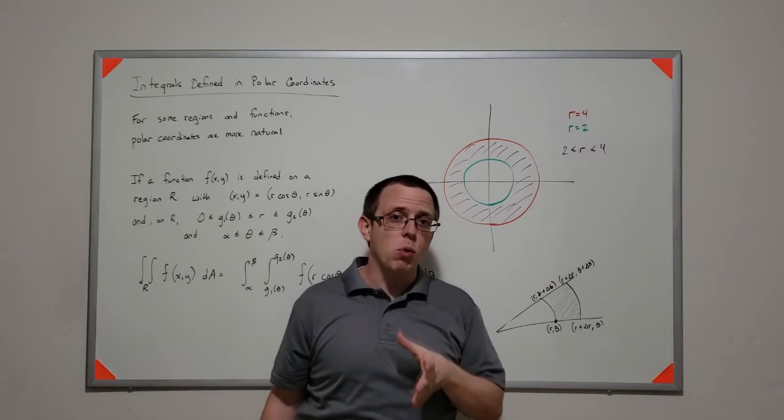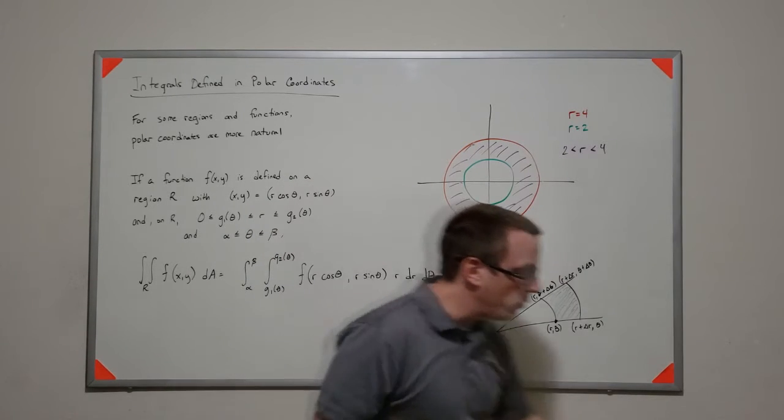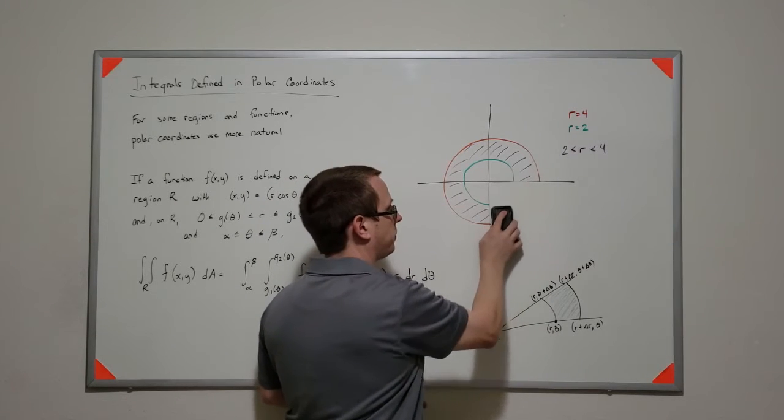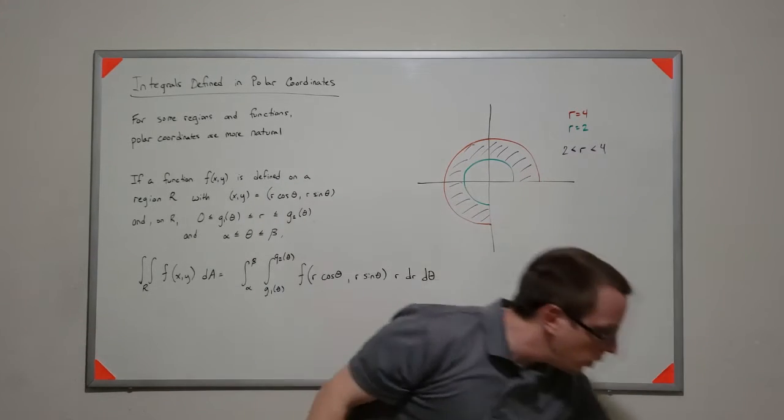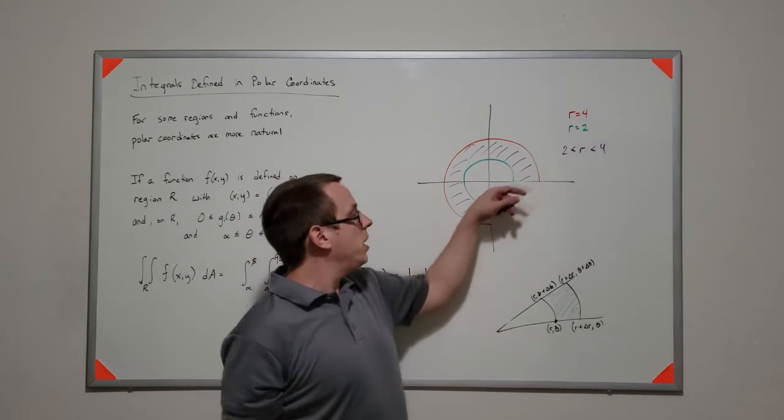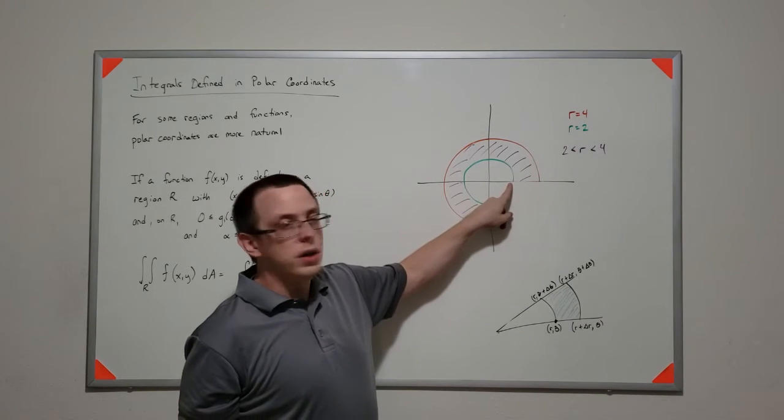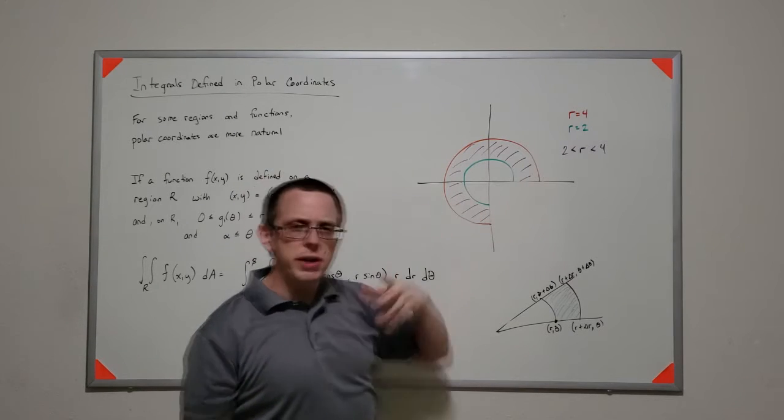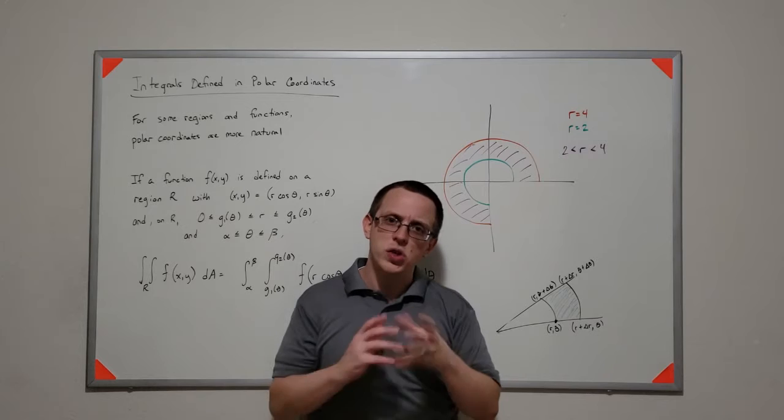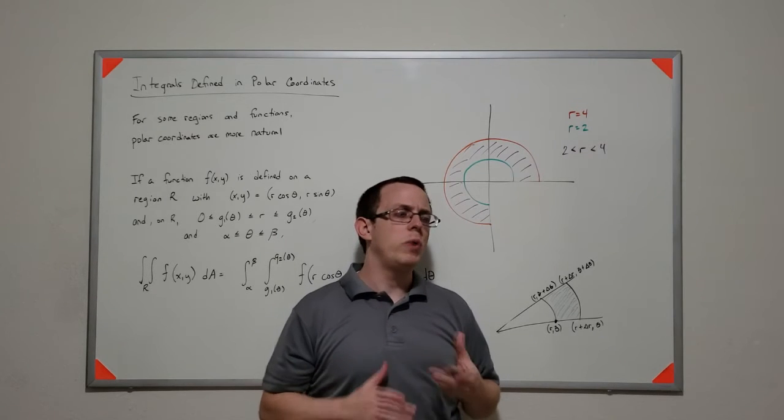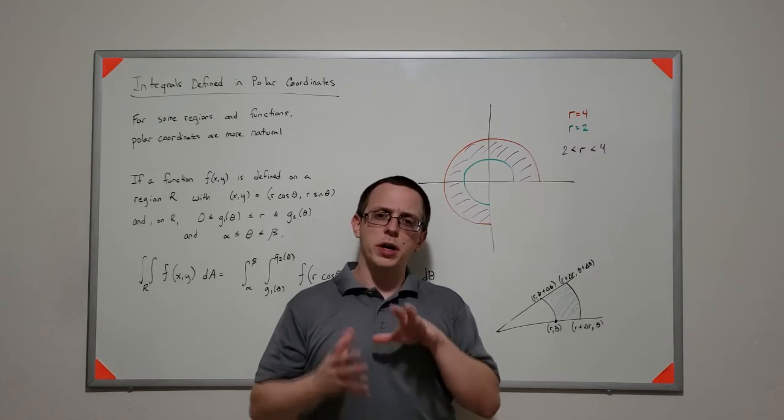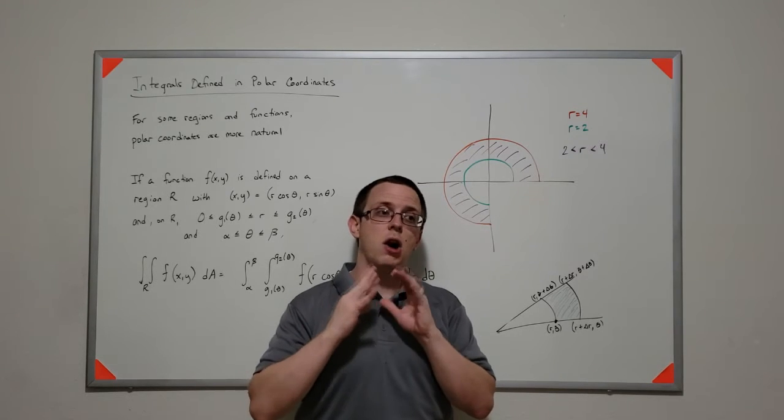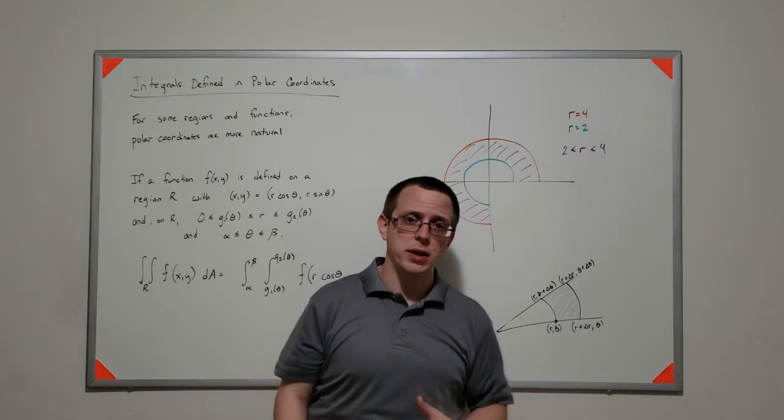And this becomes ever more complicated if it turned out that your region of integration was something like this. Right, now it's easy to think about, it's the same thing in terms of r, but the theta goes from 0 to 3π over 2, so you have to be a lot more careful with how you set up your order of integration. But luckily, with polar coordinate transformations, we can set this up that it operates natively in polar coordinates, and we can integrate that.